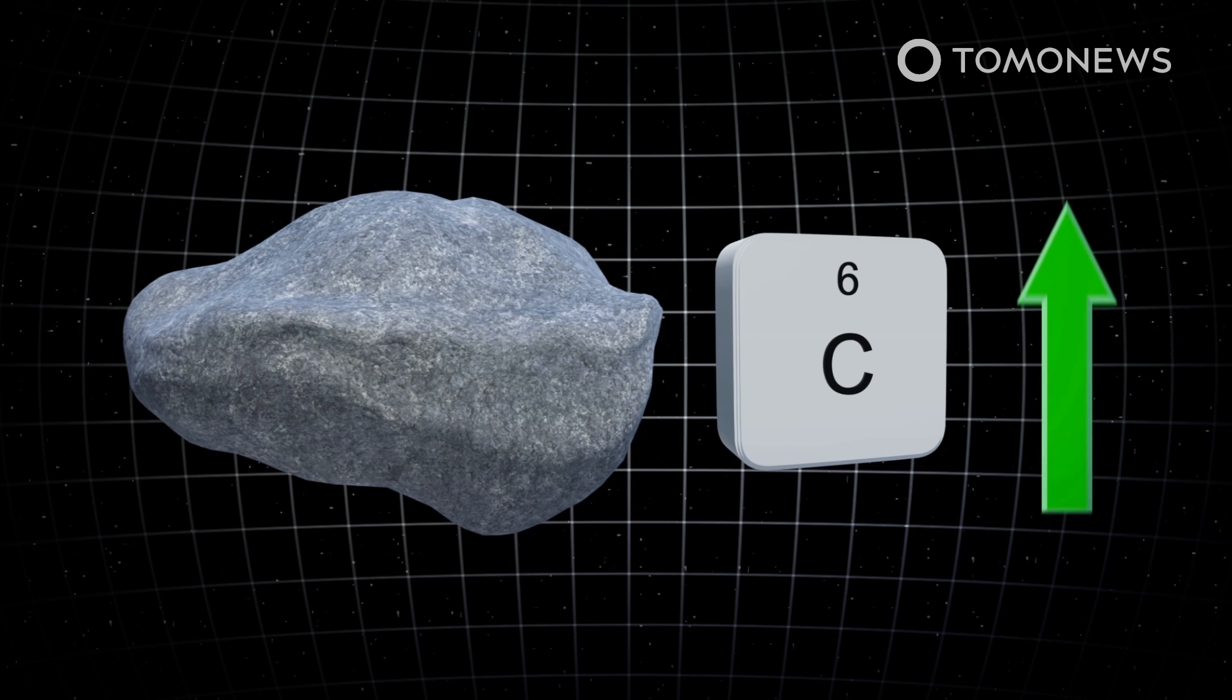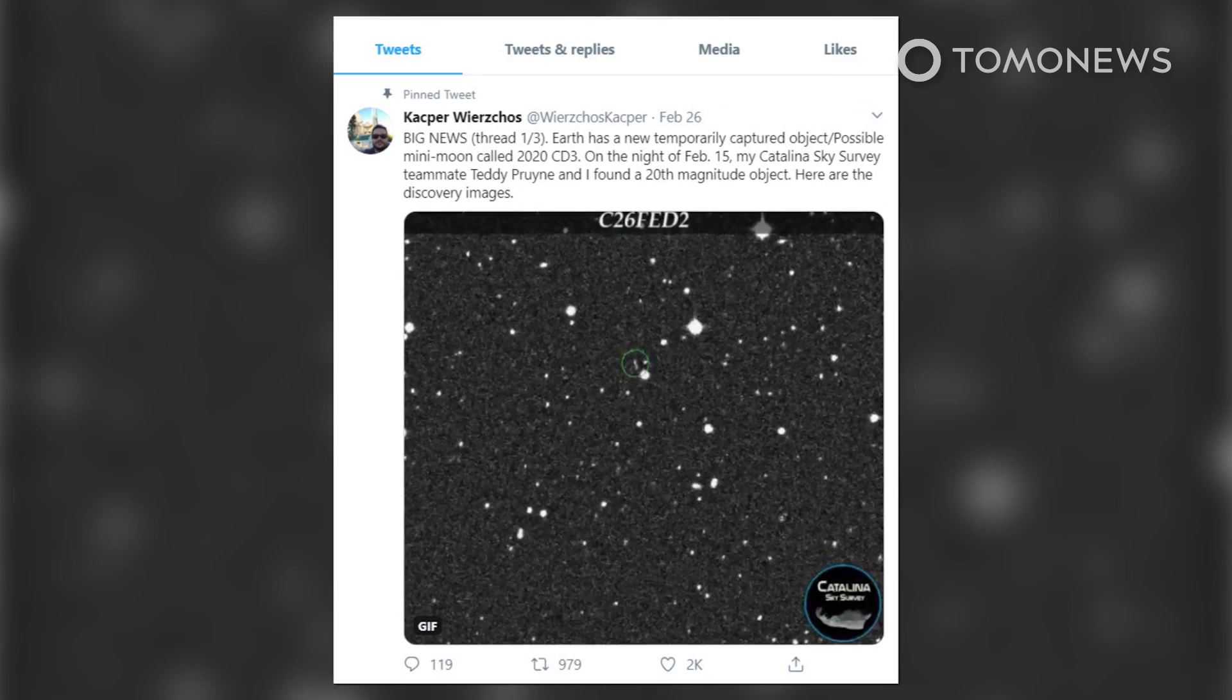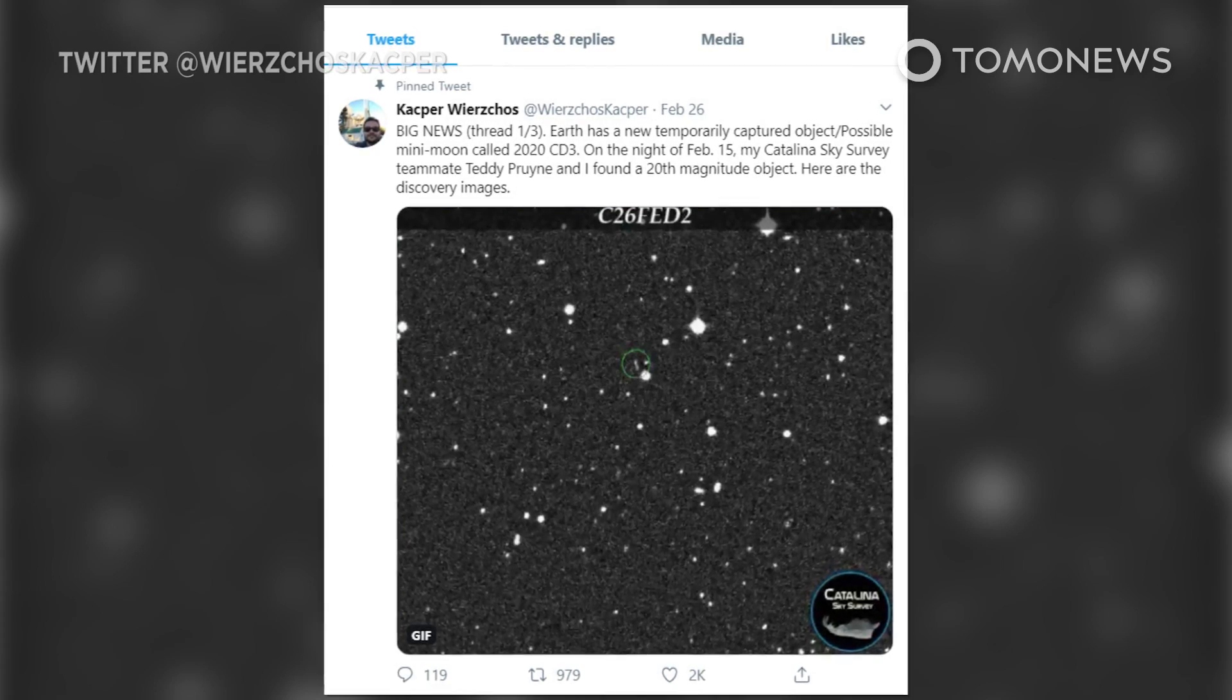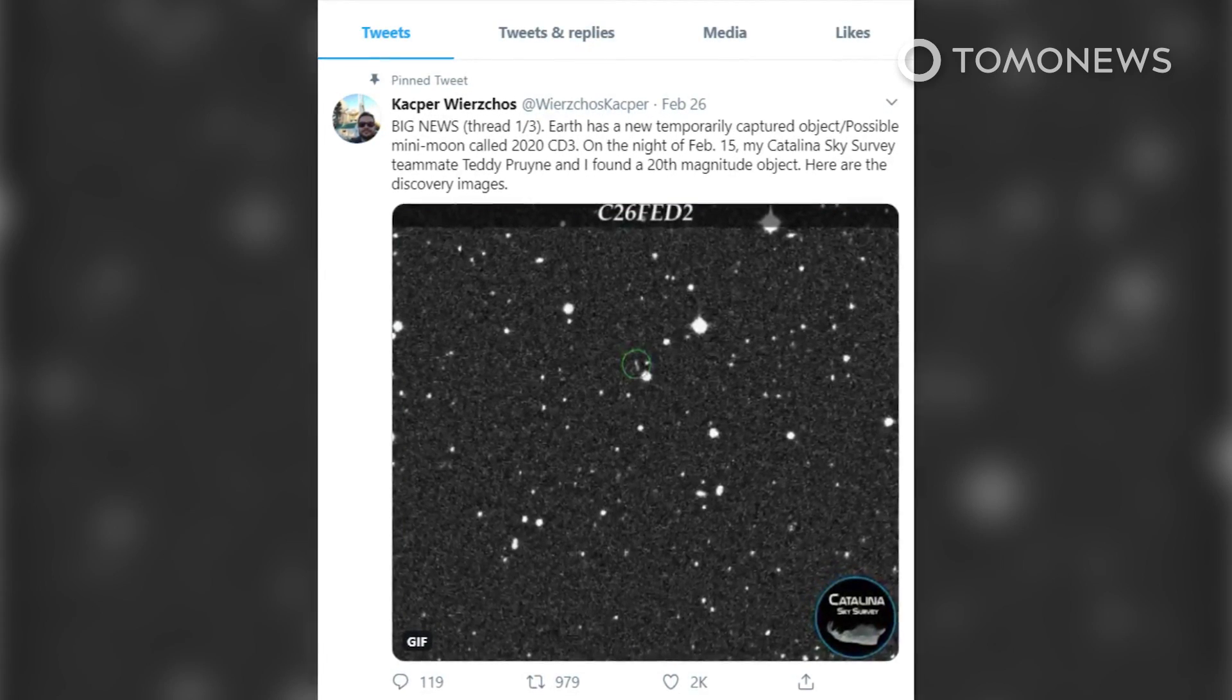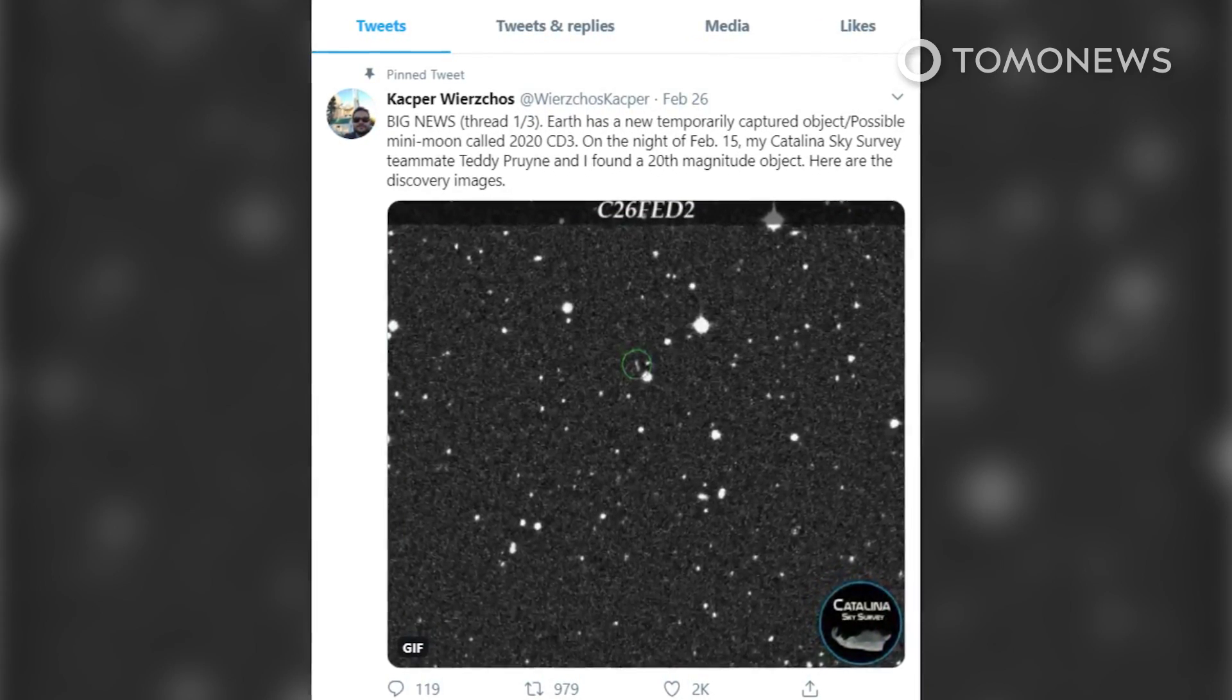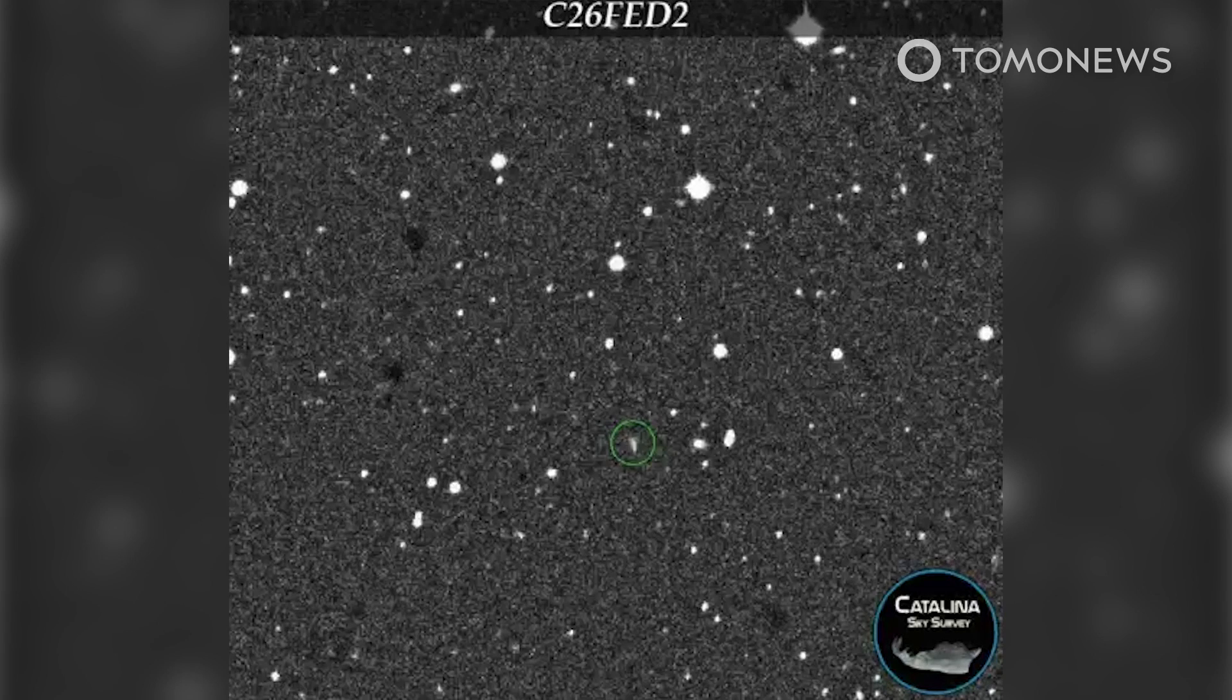Other observatories have yet to confirm the sighting. Co-discoverer Casper Wirtzkos, an astronomer with NASA and the University of Arizona, tweets that the Catalina Sky Survey team discovered 2020 CD3 on February 15.